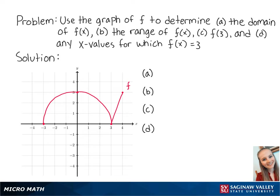For letter a, the domain of f of x is the set of all x values within the function. Looking at the graph, we can see that the smallest value of x is negative 3 and the highest value of x is 4, meaning x is between negative 3 and 4. Since the domain is inclusive on both endpoints, we write this as [-3, 4].